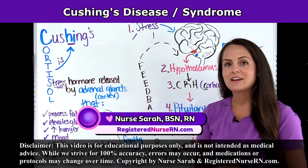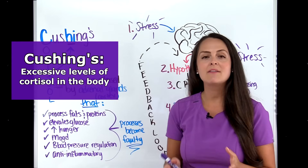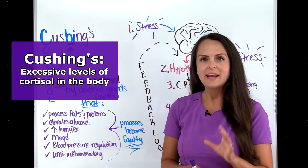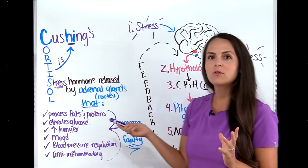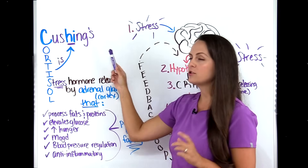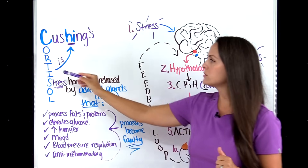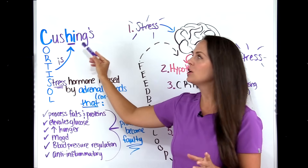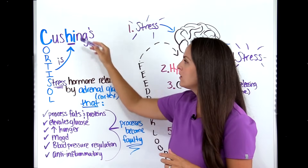Let's review Cushing's disease and syndrome. This occurs because we have excessive levels of cortisol in the body. Let the name of the disease process help you — Cushing's starts with C, so we're talking about cortisol. The word 'high' is also found in Cushing's. Put that together and we get high cortisol.